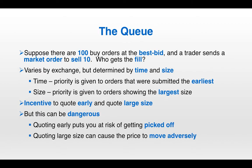Now, a discussion of some basic market microstructure — specifically how the queue works. Suppose there are 100 buy orders at the best bid and a trader comes in and sends a market order to sell 10. Who among those 100 gets the fill? This varies by exchange but is ultimately determined by time and size. Time exchanges give priority to orders submitted earliest — a first-in, first-out method. Size exchanges give priority to orders showing the largest size, typically pro-rata, so if you're quoting twice the size you'll get twice the fill allocation.